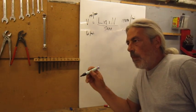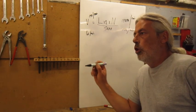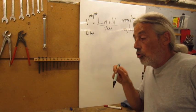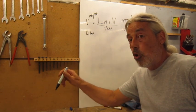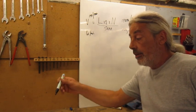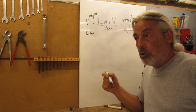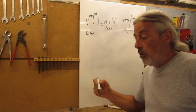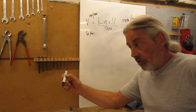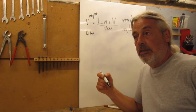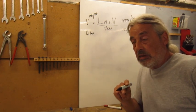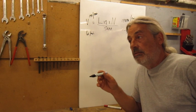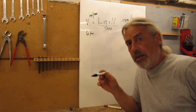Now it is well known that on the shaper, the cutting stroke is slower than the back stroke. So the cutting speed is not the same on the cutting stroke as on the back stroke. To explain this more clearly, I'm going to build a shaper model.